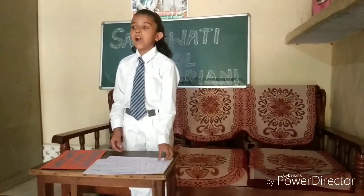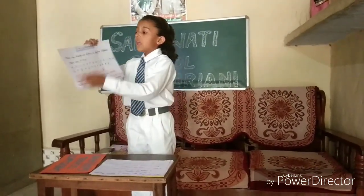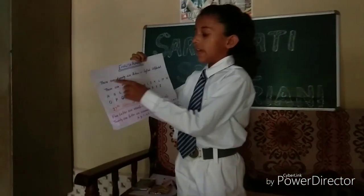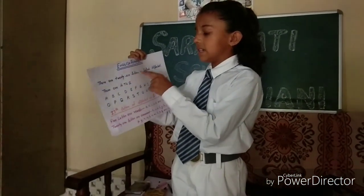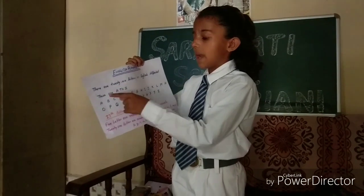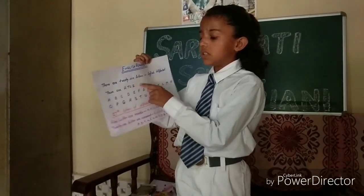Let us start our topic. English alphabet. There are 26 letters in English alphabet. These are A to Z.